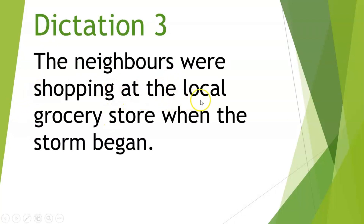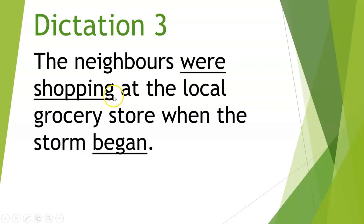The neighbors were shopping at the local grocery store when the storm began. Now we're going to look for the past continuous verb and the simple past verb. 'The neighbors were shopping' — that's past continuous — and then 'the storm began' is the simple past. In other words, the neighbors were shopping at the store, and then while they were in the process of shopping, the storm began. Both of these actions are in the past.